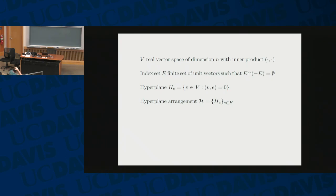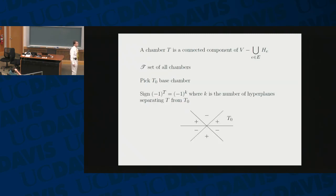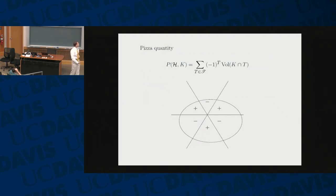I would like to go up in higher dimensions. I have a vector space V, a set of unit vectors. For each unit vector, I have the orthogonal hyperplane, and thus I have a hyperplane arrangement. A chamber is a connected component of the complement. I have to pick a base chamber, so that I can assign a sign to each chamber from there on. The pizza quantity is then the following alternating sum: the sum over the chambers of the sign times the amount of pizza in that chamber.